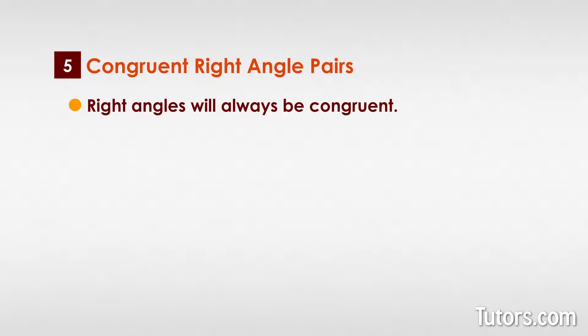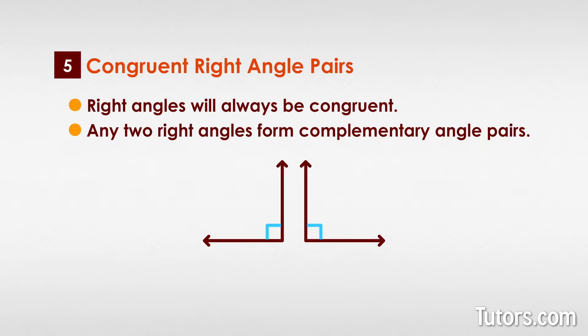Right angles will always be congruent, and any two right angles form complementary angle pairs. Some figures, such as parallel lines cut by a transversal, create special angle pairs.